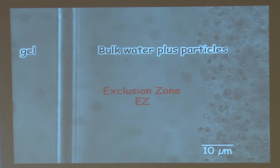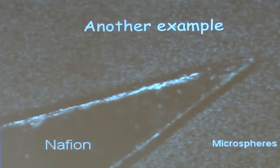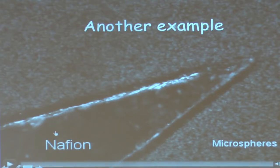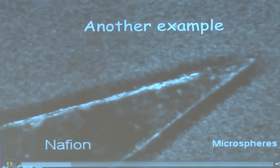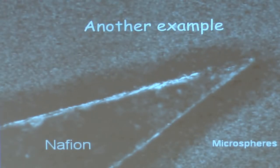Here's another example using a completely different material: Nafion. Nafion is like Teflon but with many charged groups, and it comes in sheets. You place a sheet in a chamber, add water and microspheres, and the same thing happens. This polymer does the same as the gel — and in this case the exclusion zone extends typically four or five hundred micrometers, half a millimeter. You don't even need a microscope to see it.